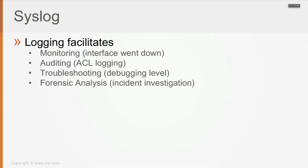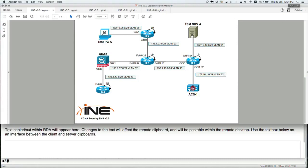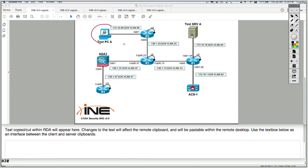Logging is also used for auditing purposes, like ACL logging. Whenever you configure an ACL with the scope of filtering traffic, you may use the logging keyword so that all traffic matching that ACL creates log messages. For example, ACL logging is useful if you assume that a PC is infected — say, you believe it's infected with a virus or worm and that it's going to start sending packets destined to TCP port 445.